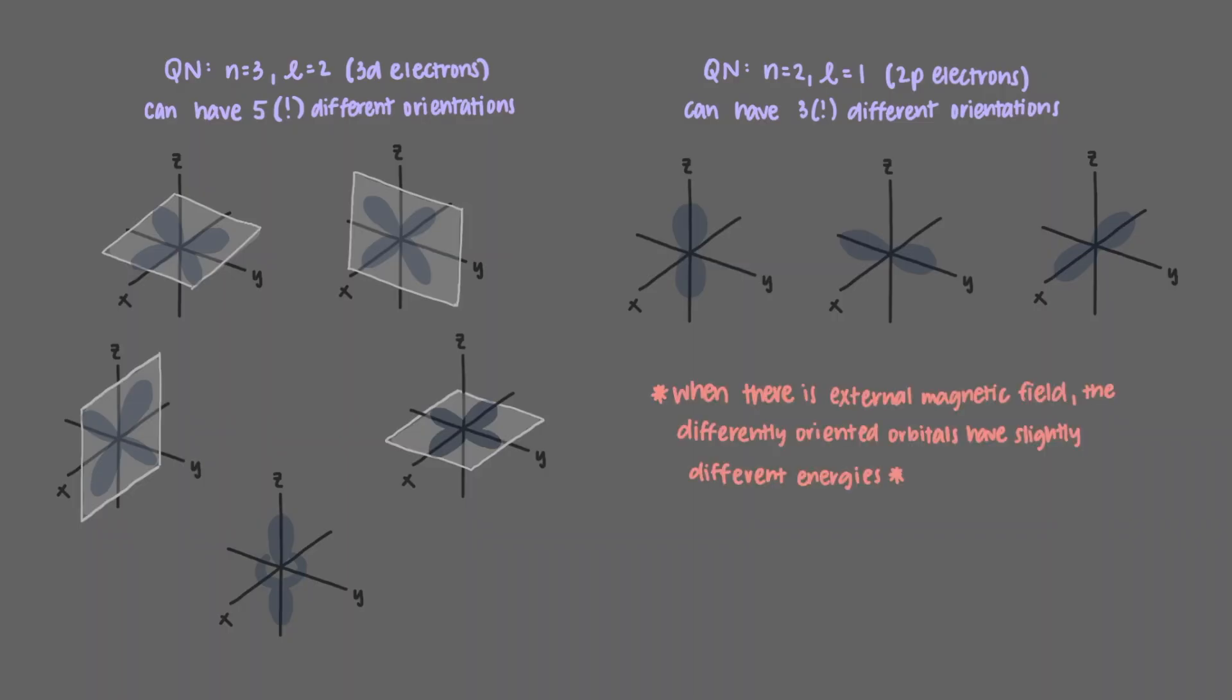And when you have an external magnetic field, the differently oriented orbitals have slightly different energies. Let's start by examining the 2P orbitals.